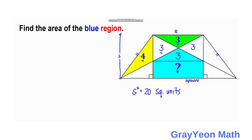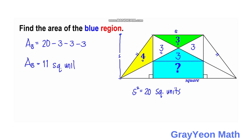For the final step, the area of the blue region — let's call this Area B — is equal to the total area of the square, which is 20 square units, minus these three parts: the two white regions, so minus 3, minus 3, and minus 3 again for the green region. So the area of the blue region equals 11 square units, and that is our answer.